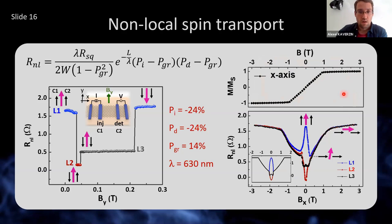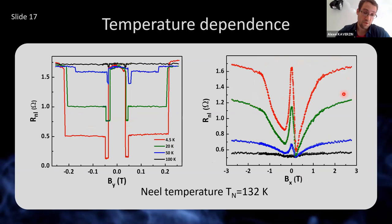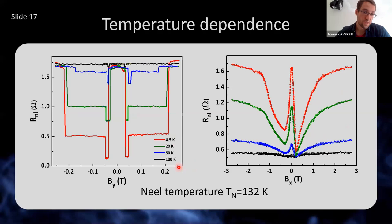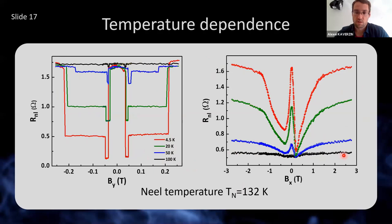The next measurement is temperature dependence. From our collaborators, we know that the Néel temperature for this material is around 132 Kelvin, meaning all magnetic order is lost above that temperature. And that's exactly what we see in our non-local measurements. At 4.5 Kelvin the signal is largest at about 2 ohm, and it considerably decays down to the noise level already at 100 Kelvin. The same happens for the Hanle measurement — we start with a large modulation on the order of 1 ohm, and at 100 Kelvin it's almost gone.